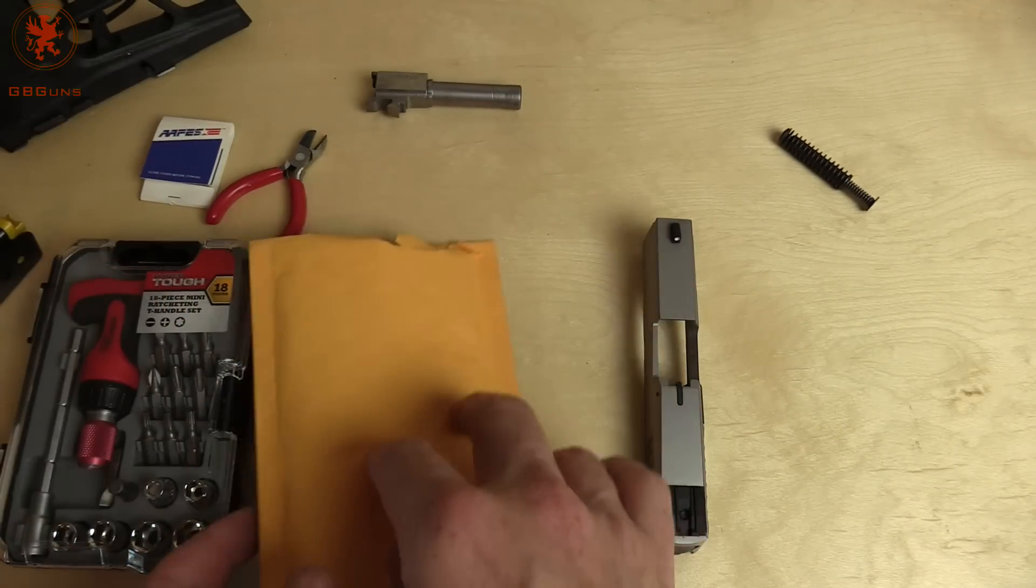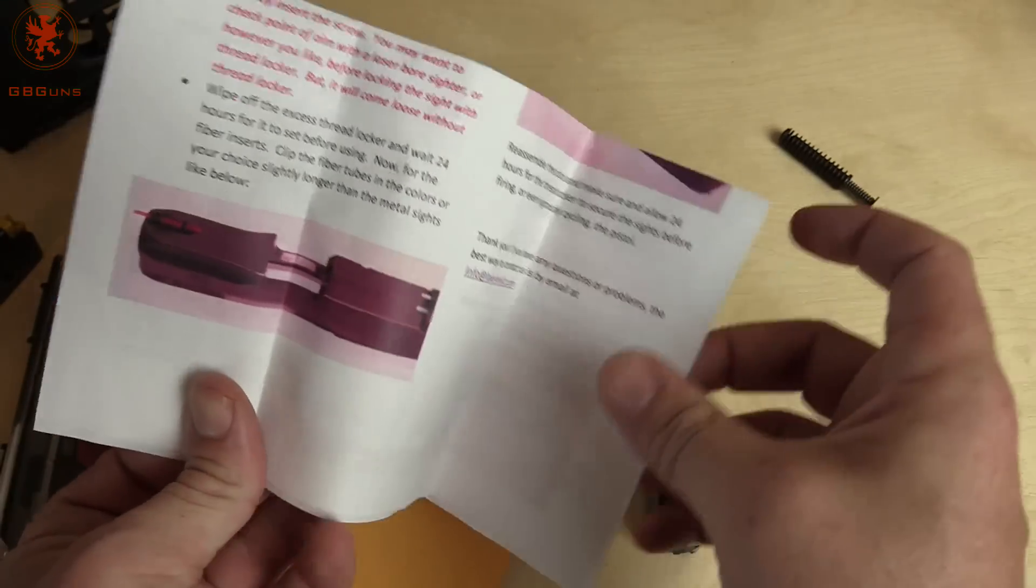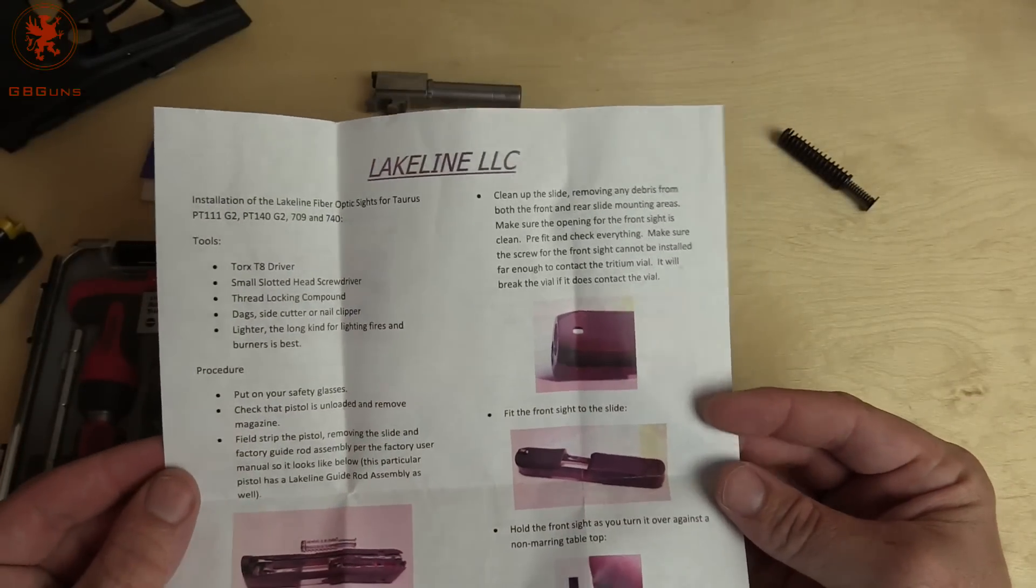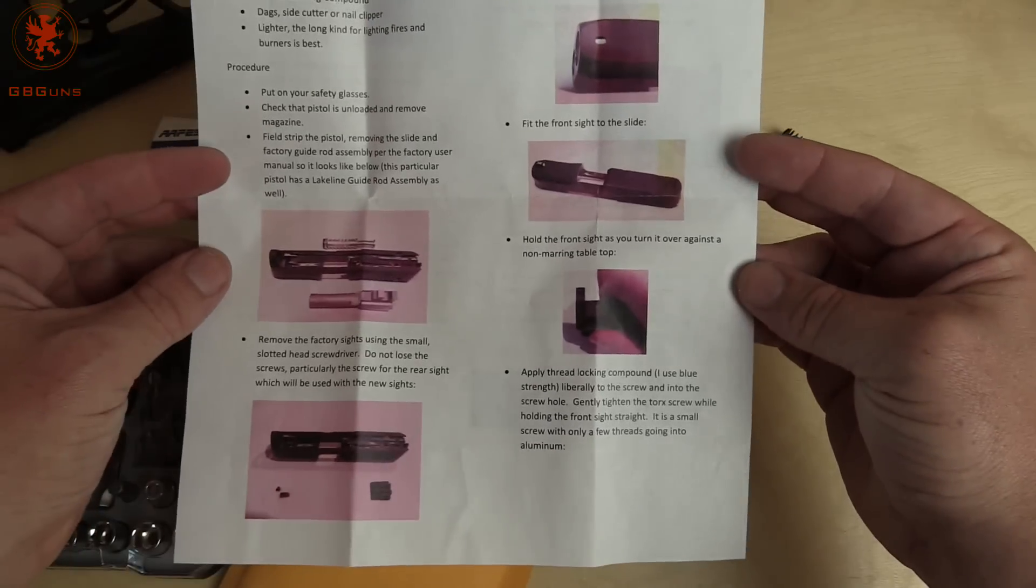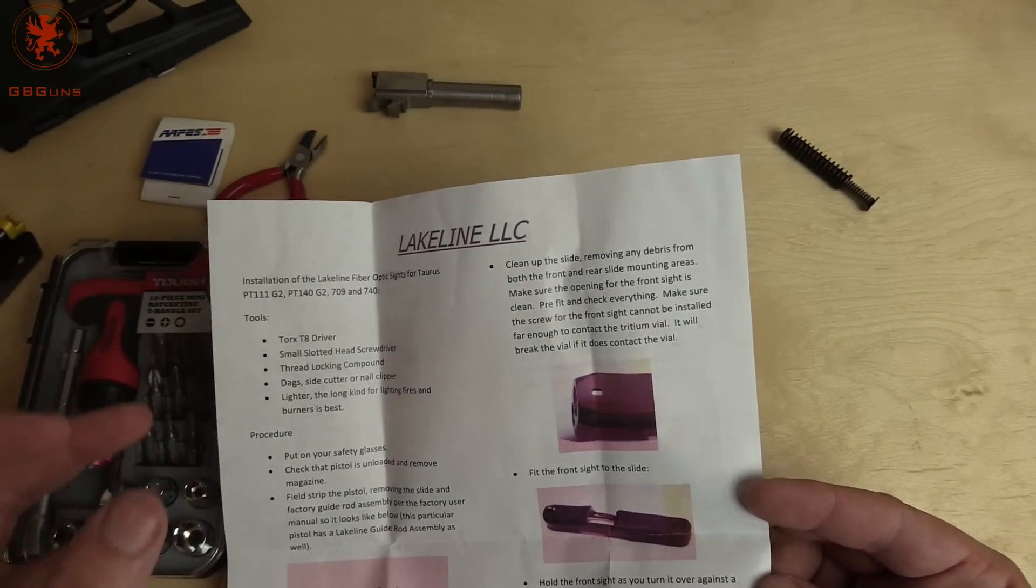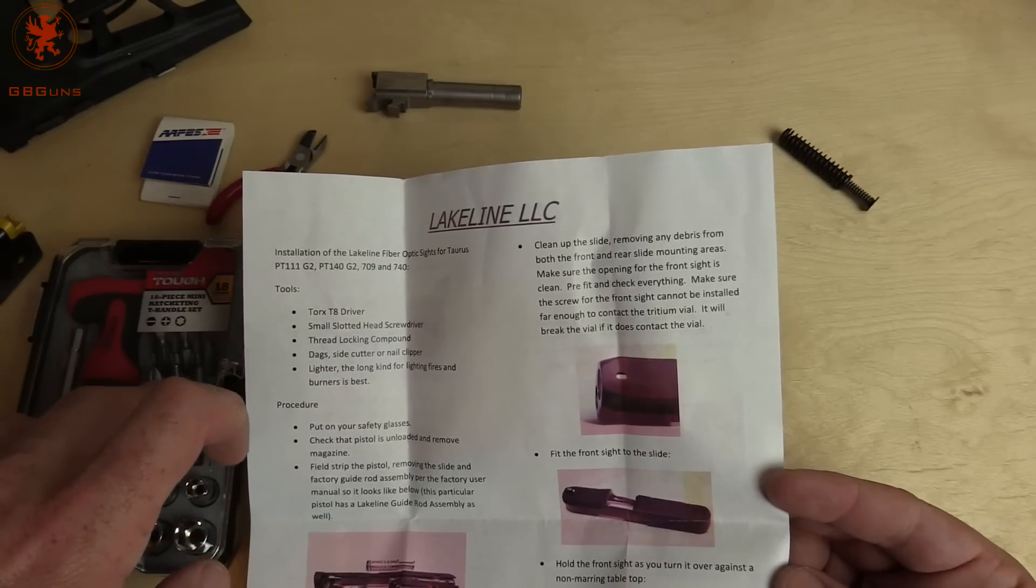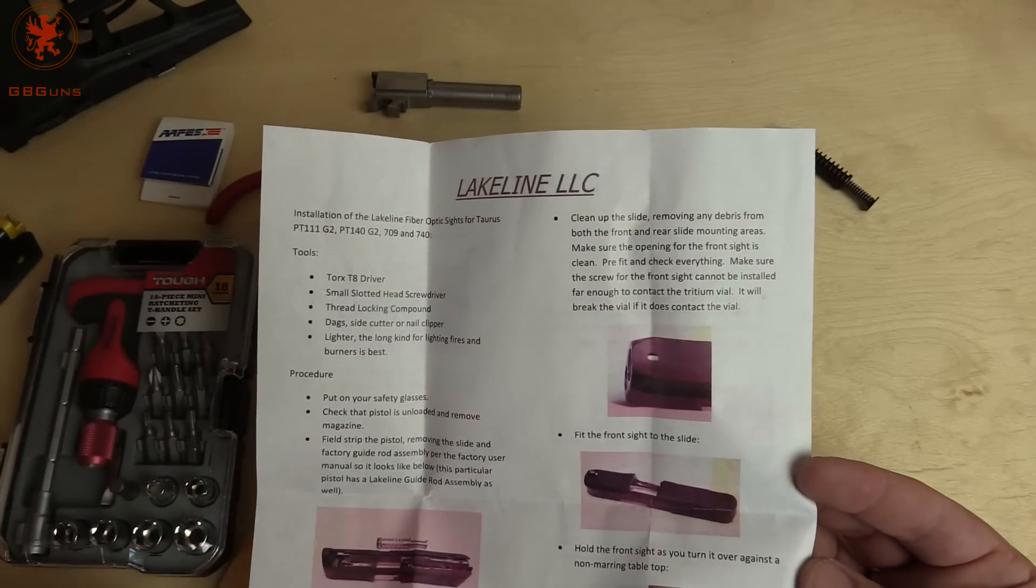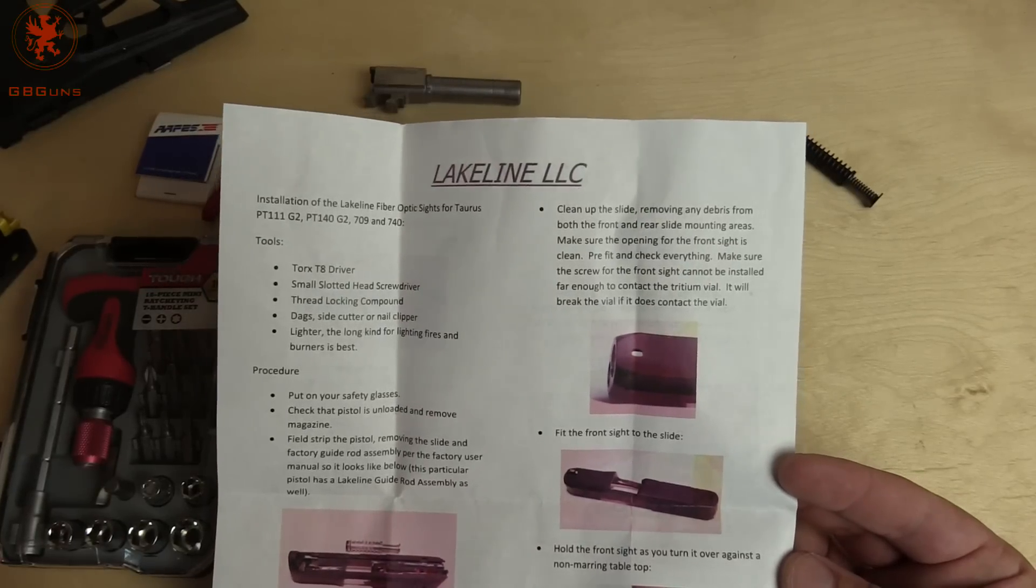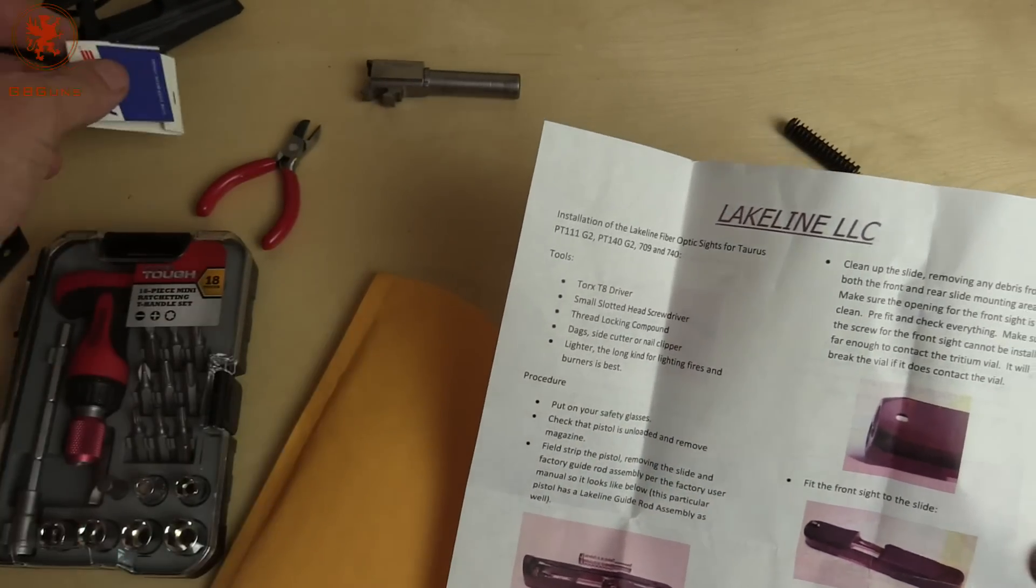Let's see what we got in the package. Looks like with all Lakeline parts that we've dealt with, you get a nice full color instructions. It lists out the tools that you need. We got a Torx driver, small slotted head screwdriver, thread locking compound, dykes, side cutter or nail clipper, and a lighter. Long kind for lighting fires and burners best. We've got matches today. Let's see if that works.